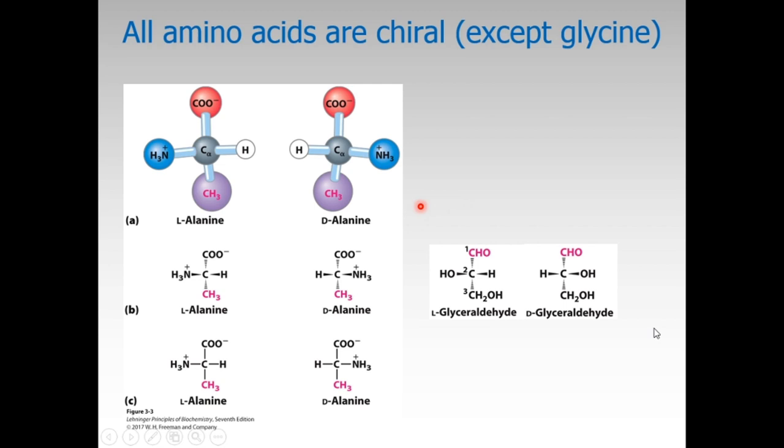Special nomenclature has been developed to specify the absolute configuration of the four substituents of the asymmetric carbon. The absolute configurations of simple sugars and amino acids are specified by the D-L system—capital D and capital L system—and this is based on the absolute configuration of the three-carbon sugar glyceraldehyde, the convention proposed by Emil Fischer, and hence Fischer projections. For all chiral compounds, stereoisomers having a configuration that is related to L-glyceraldehyde are designated as L, and if the configuration is similar to D-glyceraldehyde, it will be labeled as D.